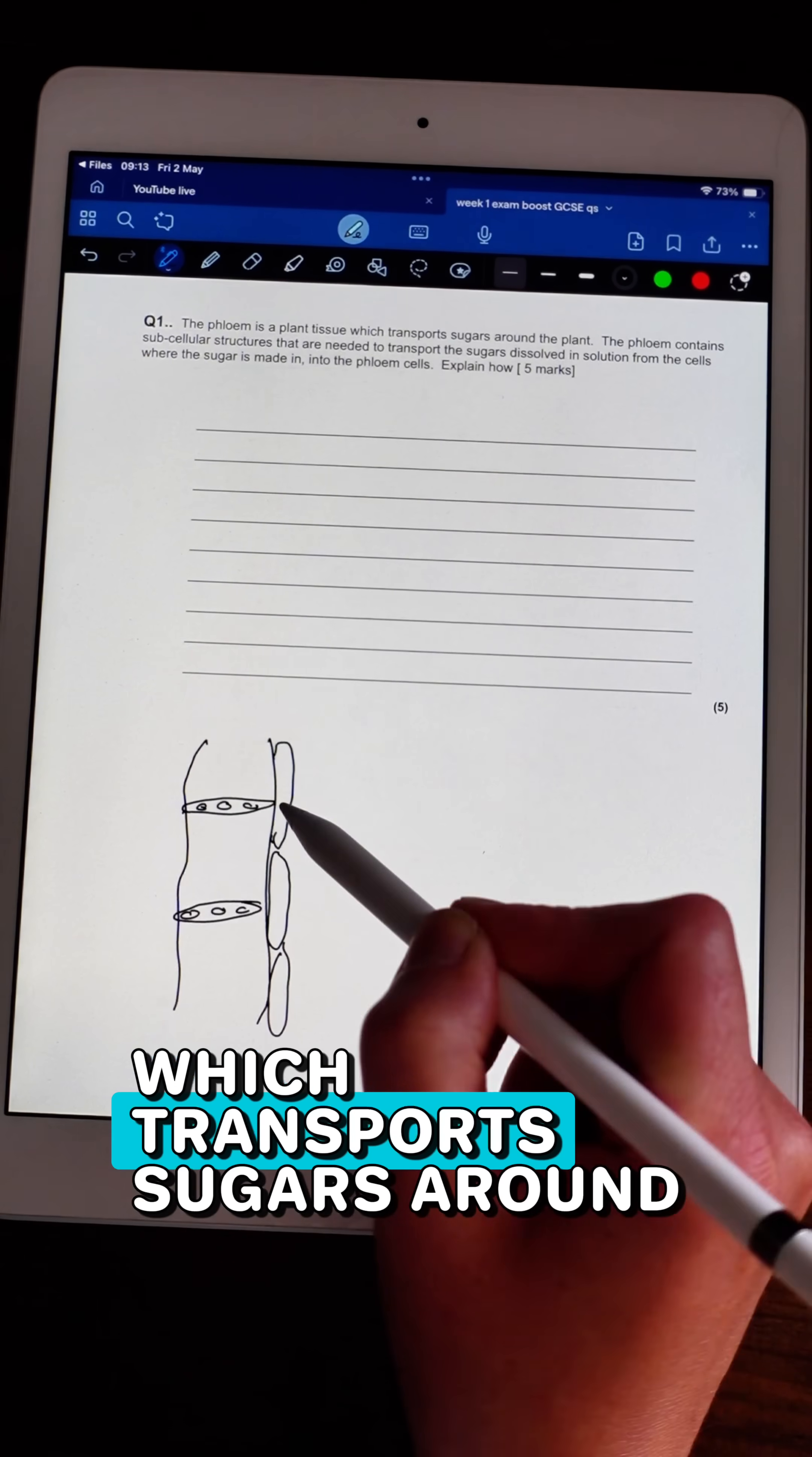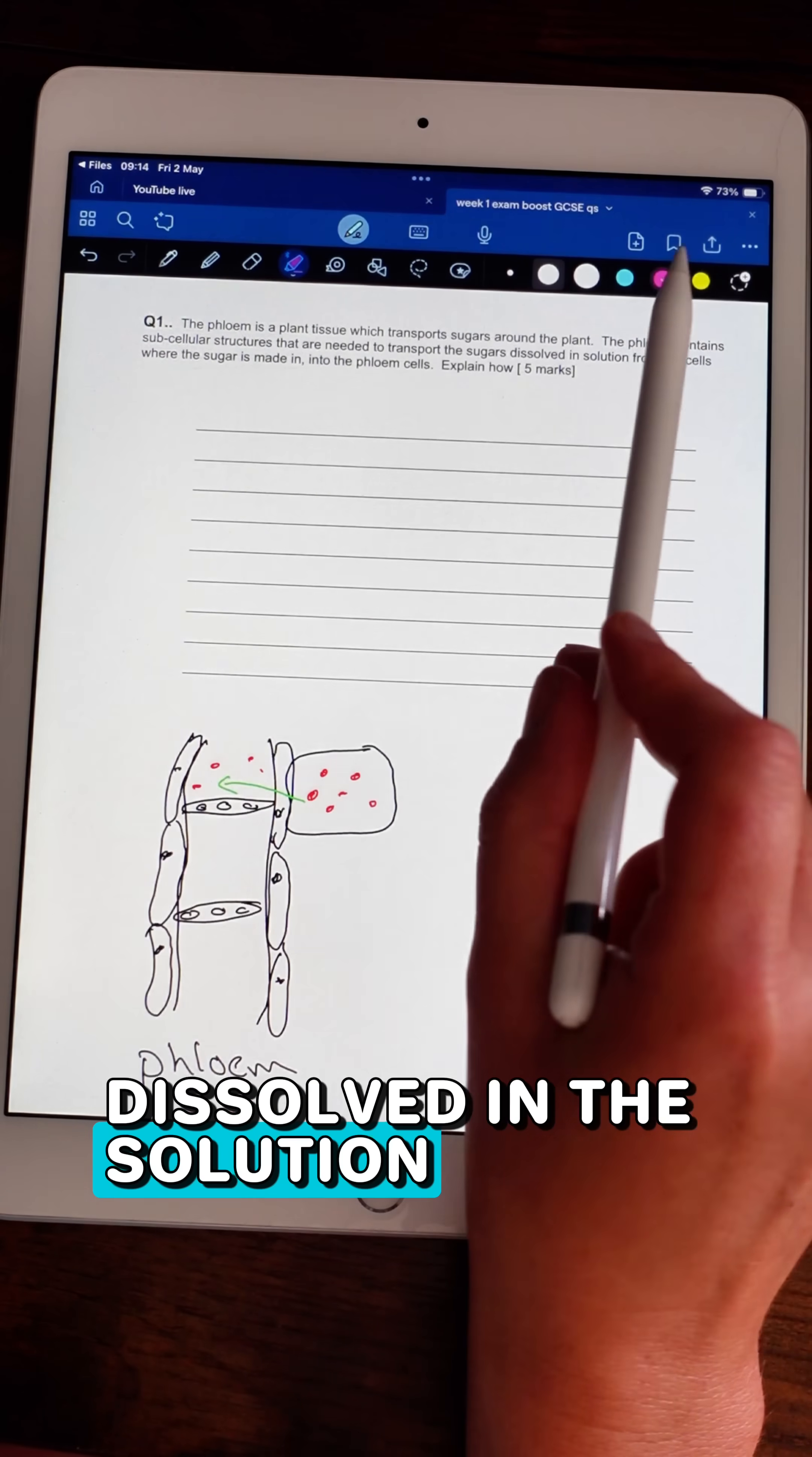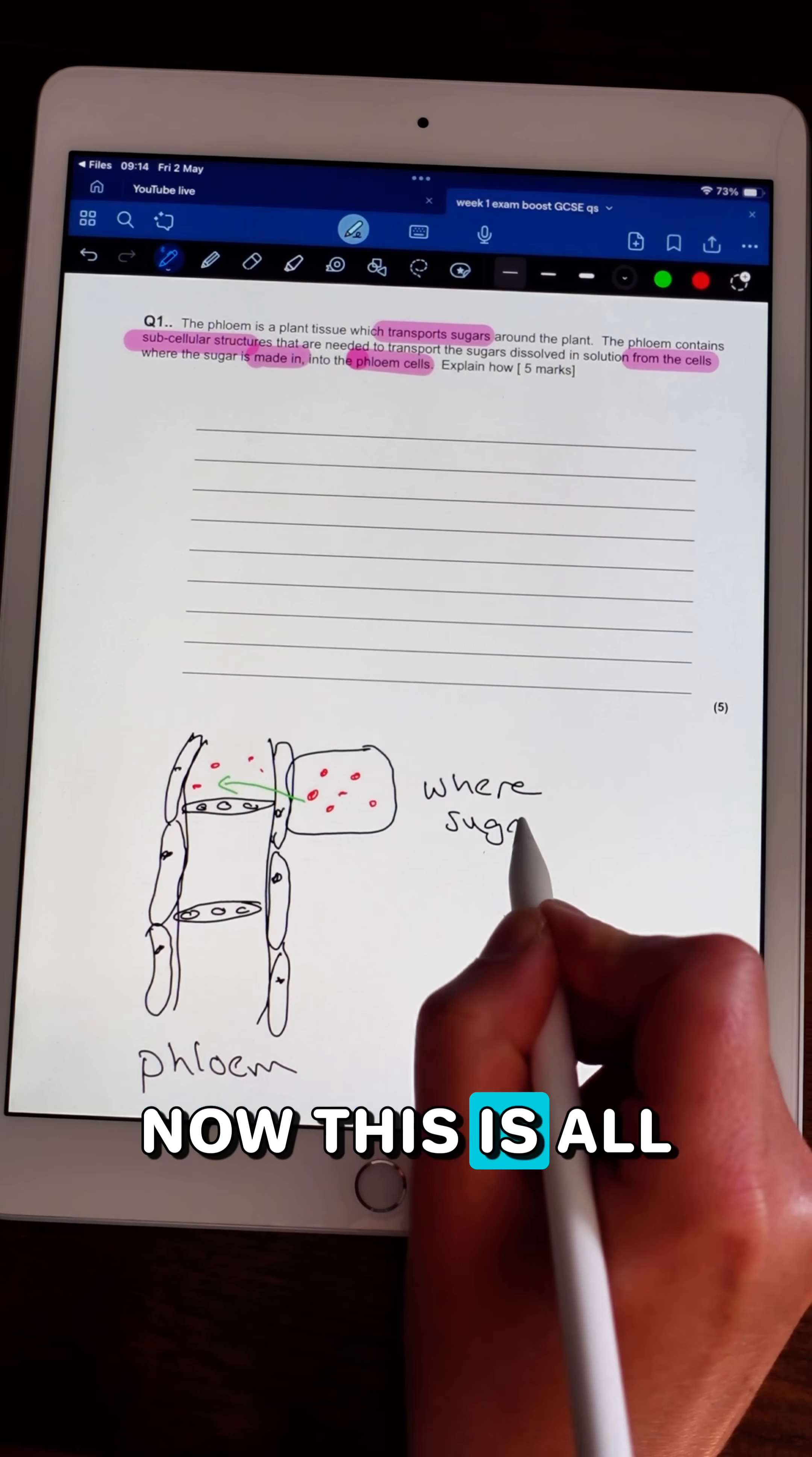The phloem is a plant tissue which transports sugars around the plant, and I've drawn a phloem here. The phloem contains subcellular structures that are needed to transport the sugars dissolved in solution from the cells where the sugar is made into the phloem cells, and we have to explain how. Now this is all going around the...